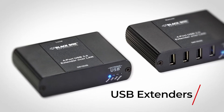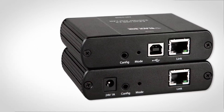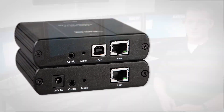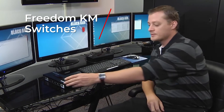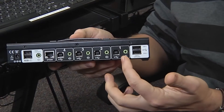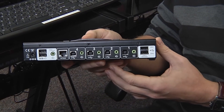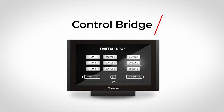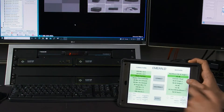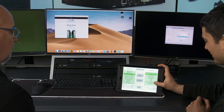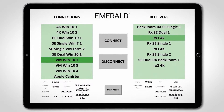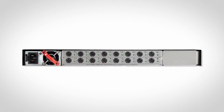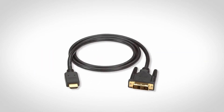USB companions provide high-speed USB connectivity of up to 480 Mbps if the Emerald endpoint's native 50 Mbps of USB throughput is not enough. The Freedom desktop keyboard and mouse switches provide switching between separate computers and desktops simply by moving a mouse cursor from monitor to monitor. Control Bridge touchscreens offer a user-friendly interface for managing and automating switching of Emerald transmitters and receivers with a single touch, by communicating with Boxzilla over REST API. And of course the peripheral equipment such as rack mount kits, power hubs, SFP modules, cables and adapters.